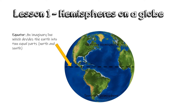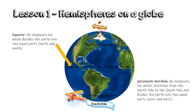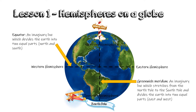In the Northern Hemisphere we get the North Pole, and in the Southern Hemisphere we get the South Pole. The Greenwich Meridian is an imaginary line which stretches from the North Pole to the South Pole and it divides the Earth into two equal parts. The two hemispheres are called the Western Hemisphere and the Eastern Hemisphere.